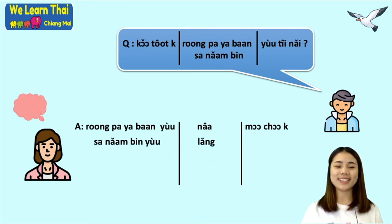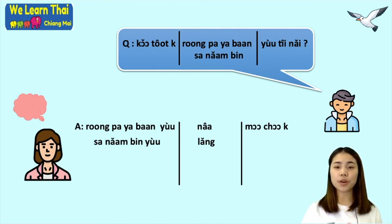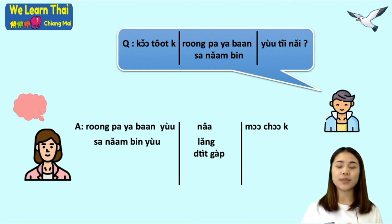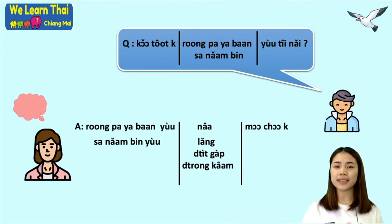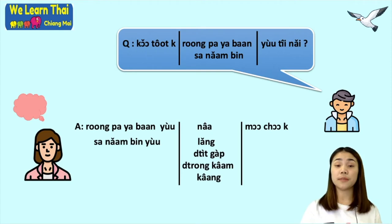You can also say 'sanam bin yu lang mo shokha' — the airport is behind Chiang Mai University. Or you can use 'tic gap', which means next to, or 'trong kam', meaning opposite. The last option is 'khaang', which means beside.